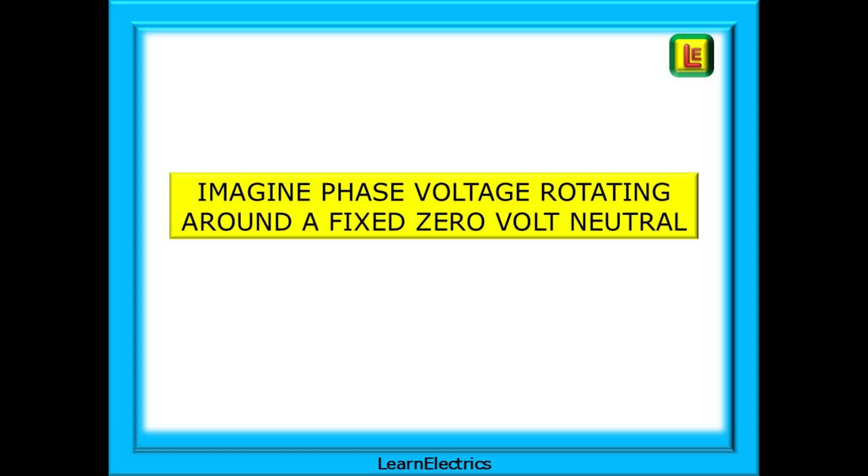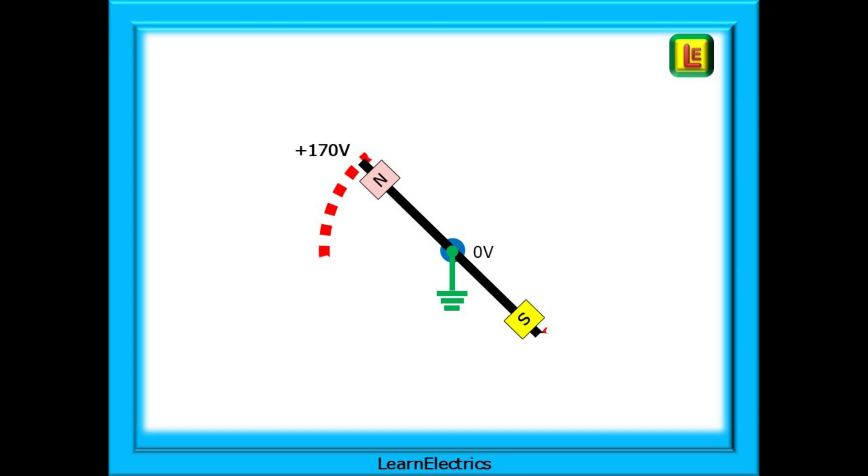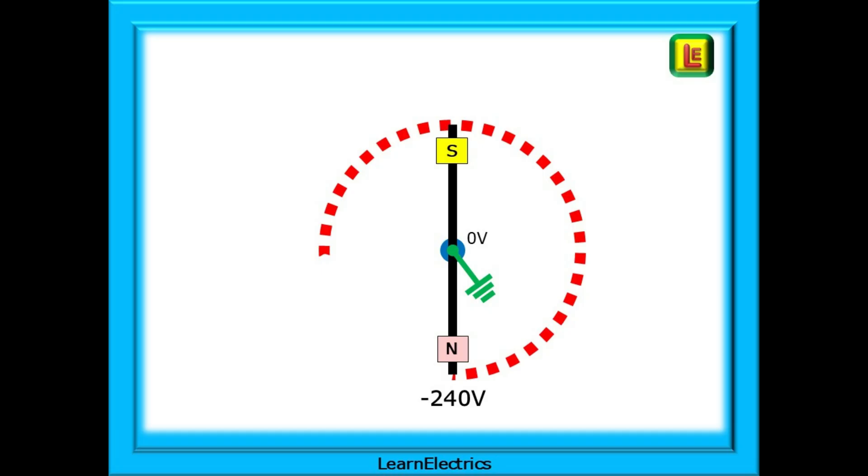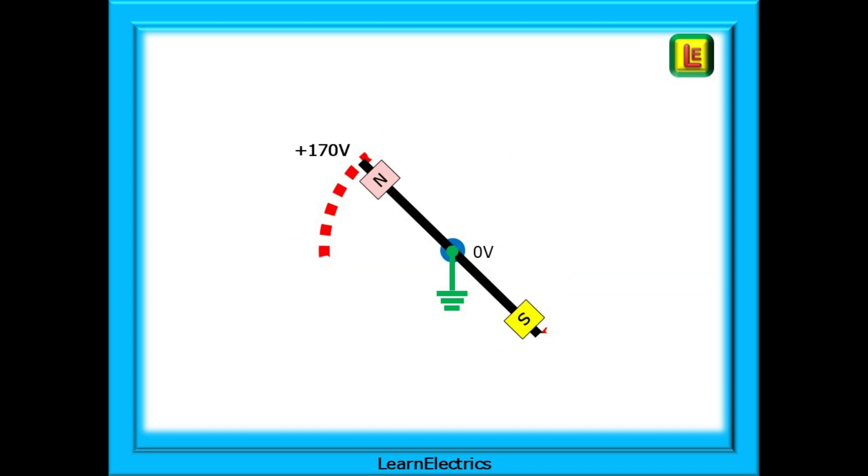Now imagine the phase voltage rotating around a fixed zero volts neutral terminal. Let's start with the line voltage at zero volts. The neutral and earth are connected together and will be fixed at zero volts at 45 degrees plus 170 volts and plus 240 volts at 90 degrees. Now 170 volts and then zero volts passing negative 170 volts and a maximum of negative 240 volts reducing to minus 170 volts and then zero volts and so the whole cycle repeats itself. Positive, negative, positive, negative.